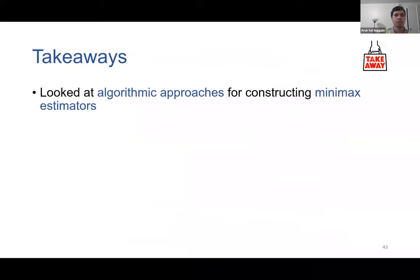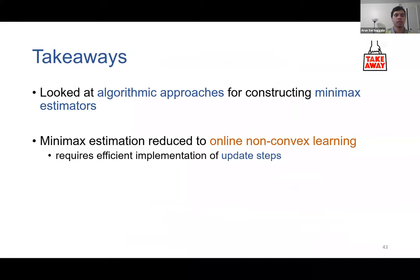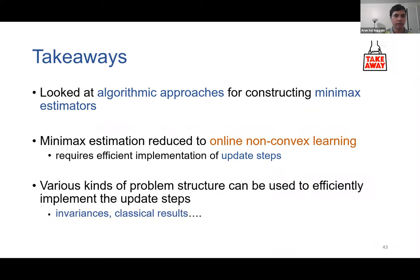Key takeaways from this part: we looked at algorithmic approaches for constructing minimax estimators, reduced minimax estimation to online non-convex learning, and showed that various problem structures — particularly symmetry and invariances — can be used to efficiently implement the update steps. There are several other kinds of structure we can rely on; please refer to our paper for more details. Our results also have applications to other problems such as contextual bandits and differential privacy.